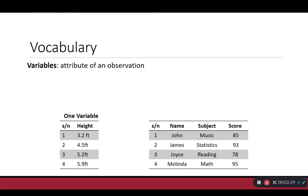Each column represents a variable, or an attribute, of that observation. On the left-hand side, we have one variable per individual — here that's height. On the right-hand side, we have three variables: name, subject, and score. We typically don't count the row number as a variable, but if you had a unique identifier in your data set, such as student ID or social security number, then that might be considered a variable.